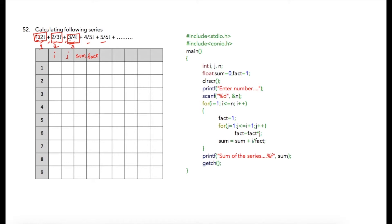Let us see how we can write the program for this. I am declaring three variables: i, j, and n. Variable i will be for iterations, variable j will be used for calculating factorials, and n is the number which we will be accepting from the user. N will signify the level of your series, so if the user has entered five this loop will be executed five times.